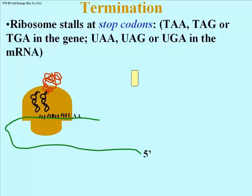As the ribosome approaches the 3' end of a message, somewhere just prior to the actual 3' nucleotide of that message, the ribosome will encounter one of three stop codons: UAA, UAG, or UGA. This stop codon is UAA.